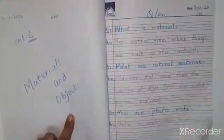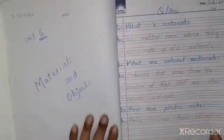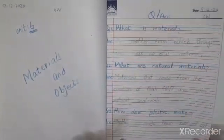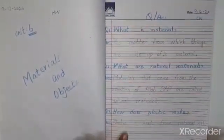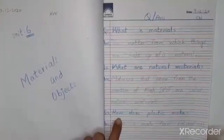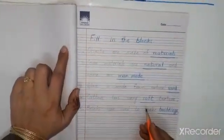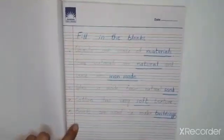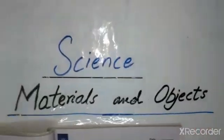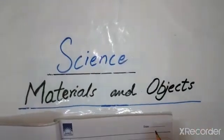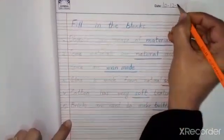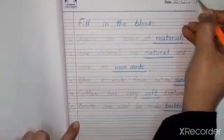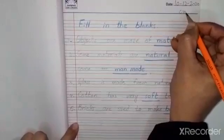Today, what are we going to do? We are going to do fill in the blanks of this chapter. We have done 3 question answers and today our class work is fill in the blanks of Unit 6, Materials and Objects. First you have to write down the date: 10-12-2020, and this is our class work.